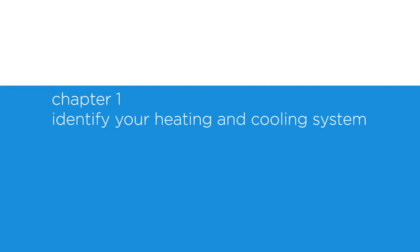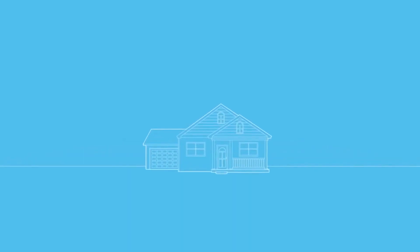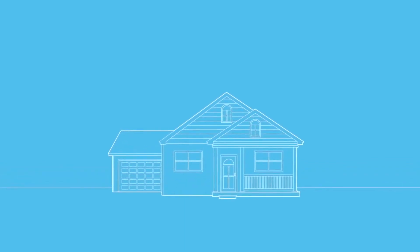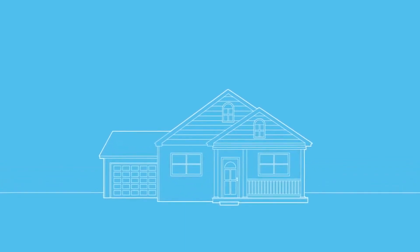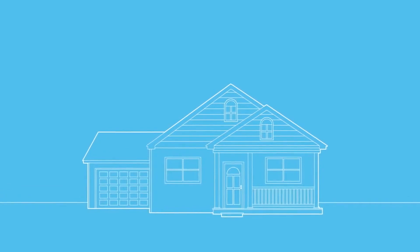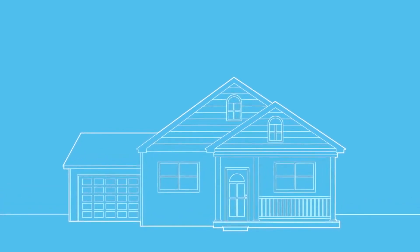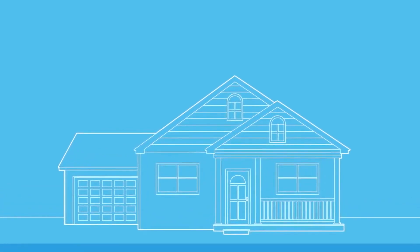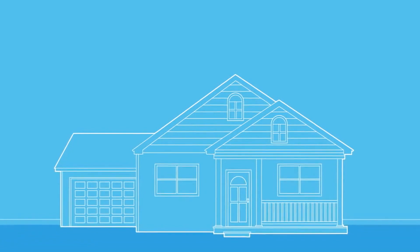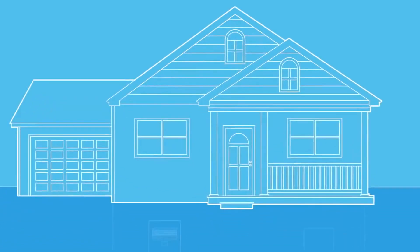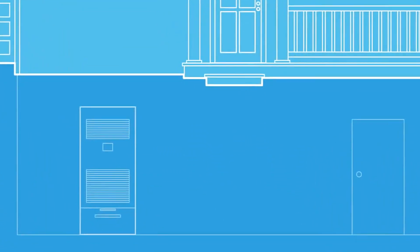Chapter 1: Identifying Your Heating and Cooling System. Thermostats are designed to work with specific heating and cooling systems. It's important that you know your system type before you install your new Honeywell thermostat. This video will help identify which type of heating and cooling system you have in your home, so you can determine if the Lyric thermostat is compatible with your system.